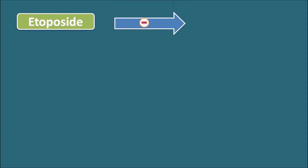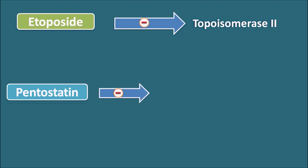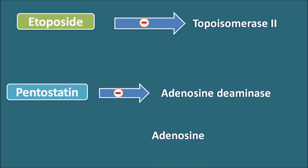Etoposide inhibits topoisomerase-2 (also called DNA gyrase), thereby inhibiting DNA synthesis. Pentostatin is an adenosine deaminase inhibitor; this enzyme converts adenosine to inosine, so pentostatin inhibits that conversion and thereby inhibits purine metabolism. Among the listed drugs, etoposide is incorrectly paired with topoisomerase-1 — it acts on topoisomerase-2.